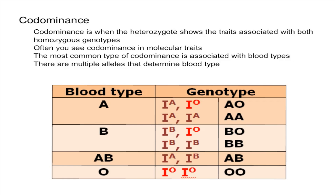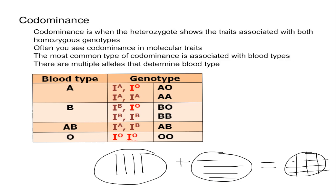So what do I mean by that? Let's say you have an animal — this circle over here is going to represent any animal, let's say a cat. This cat has stripes that are vertical, and then it's mated with another cat that has stripes that are horizontal. If these traits are codominant, then you're going to get horizontal and vertical stripes on the offspring, so it'll kind of look like a plaid cat. That's essentially what codominance means.